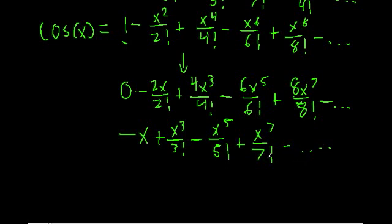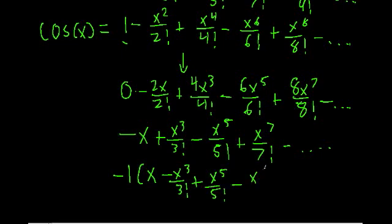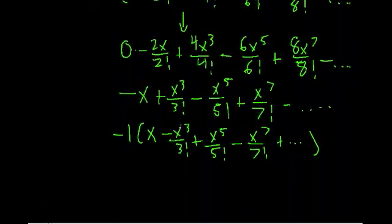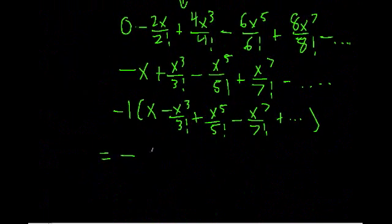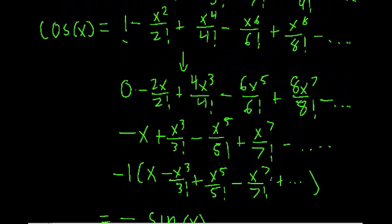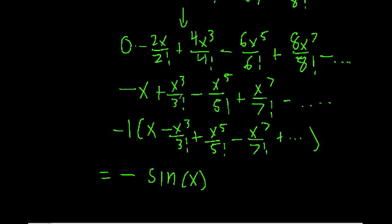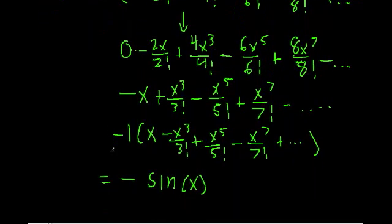Like before, we can cancel terms on the top and bottom, and we're left with negative x plus x cubed over 3 factorial, minus x to the 5th over 5 factorial, plus x to the 7th over 7 factorial, and so on. Let's factor out a negative 1: that gives us negative 1 times the quantity x minus x cubed over 3 factorial plus x to the 5th over 5 factorial minus x to the 7th over 7 factorial, and so on. We know that Taylor series — it's just the Taylor series for sine of x. So the derivative of the cosine series gives us negative sine of x, in the same way that the derivative of cosine gives us negative sine.